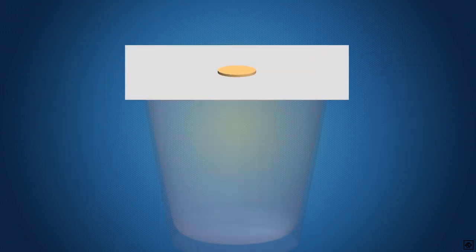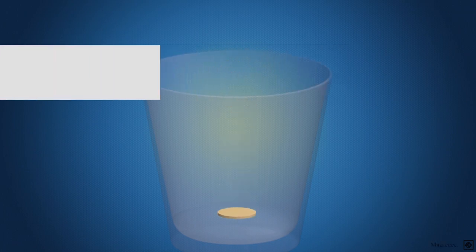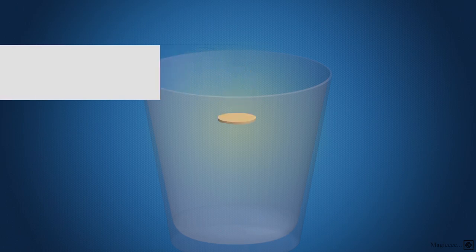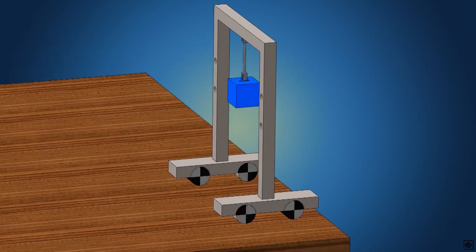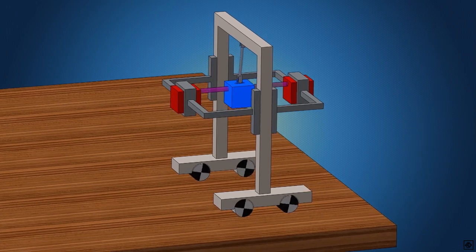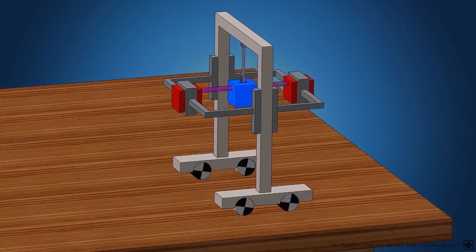But, how does an accelerometer work? It works on the principle of inertia, that is, it is the tendency of the body to resist change in its state of rest or motion. In this arrangement, a mass is suspended by the string. Now if we place two sensors that detect the distance to the mass, we can now detect the deflections of mass as the frame moves.